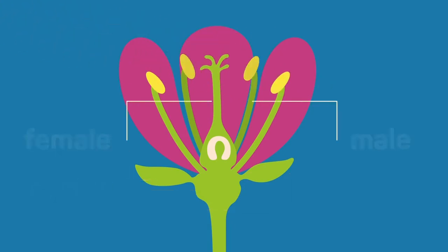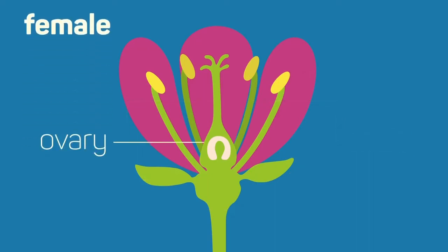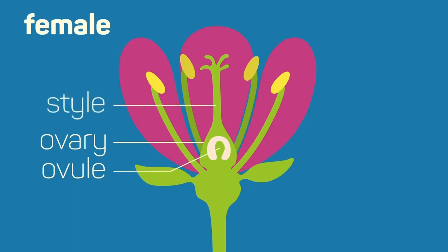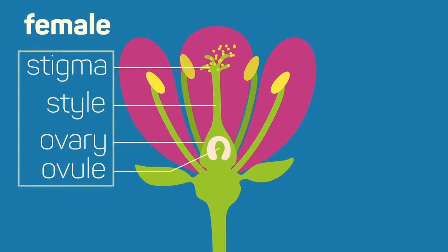Flowers have both male and female parts. The ovary develops into the fruit if the plant is pollinated. Inside the ovary are ovules which become seeds. The style connects the ovary to the stigma. The stigma usually has a sticky substance so the pollen a pollinator is carrying gets deposited there.